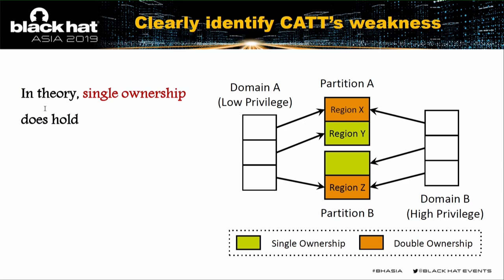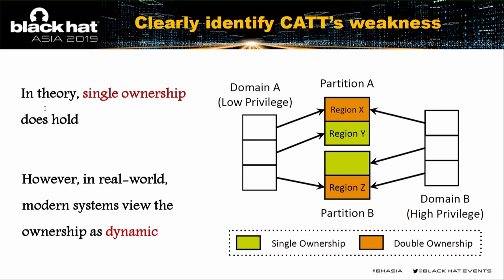In theory, the single ownership dictated by CAT holds. But in the real world, modern systems view ownership as dynamic — particularly involving double ownership. What is double ownership? A memory region X can have two owners: domain A and domain B. A similar situation occurs with partition B's region Z. To illustrate double ownership with a real-world scenario, let's regard domain A as the user domain and domain B as the kernel domain.